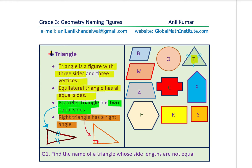So about triangles, we learned there are three types with special names: equilateral triangle has all equal sides, isosceles triangle has two equal sides, and right triangle has a square corner. Question for you: find the name of a triangle whose side lengths are not equal at all. For example, a triangle like this where no sides are equal — what is the name of this triangle? That is an exercise for you.